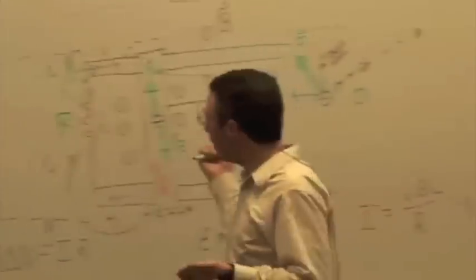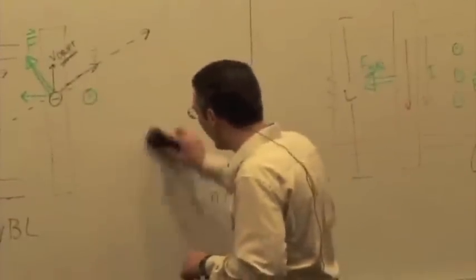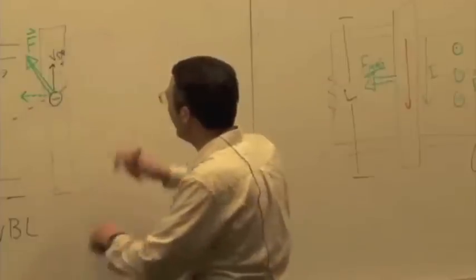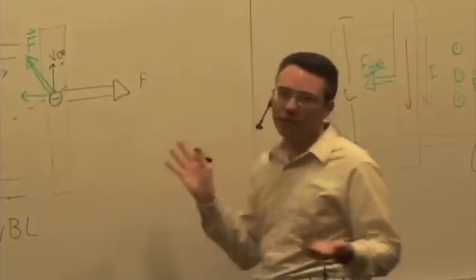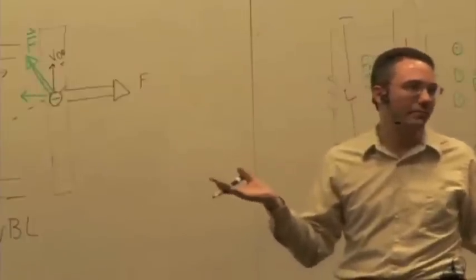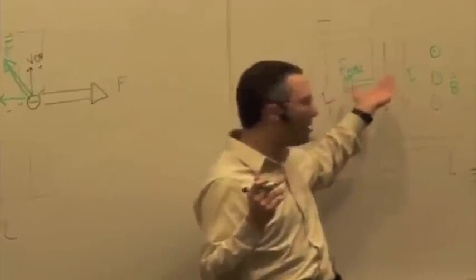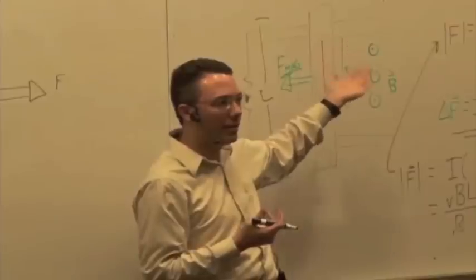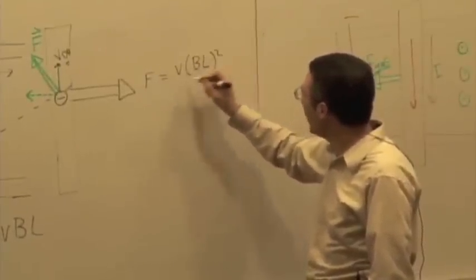Now, we said we needed to input energy in this system in order to keep it moving at a constant speed. Let's think about the power needed to keep this moving at a constant speed. I have to do work to keep it moving. And I have to apply a force in this direction. And the magnitude of that force, in order to keep it moving at a constant speed, has to be equal to what? The magnetic force in the opposite direction. I have to have a net force on this thing of zero to have a constant speed. So that's going to be V, B L squared over R.